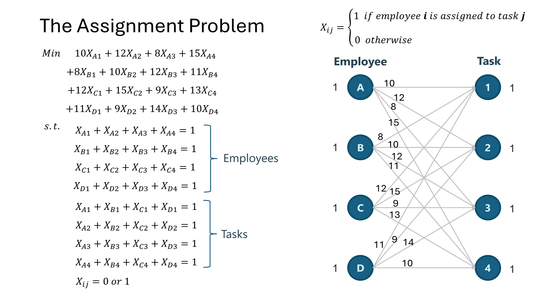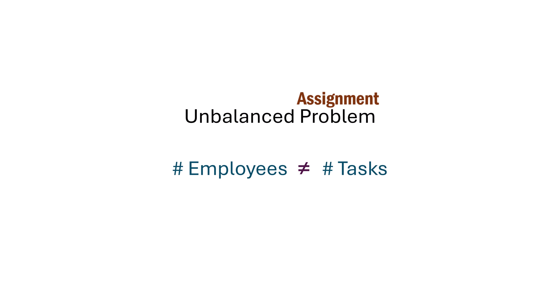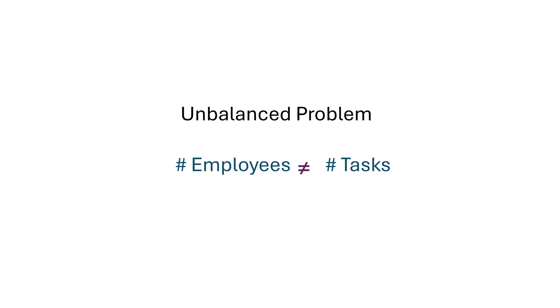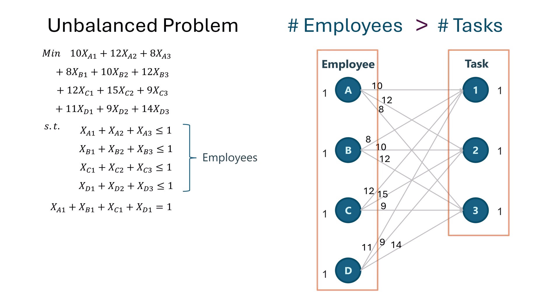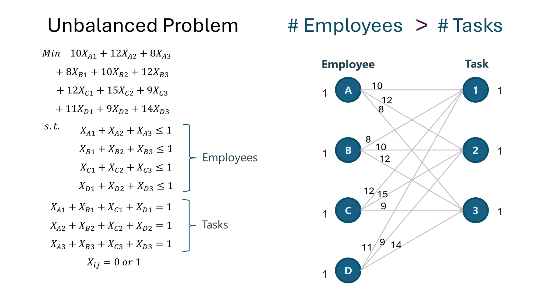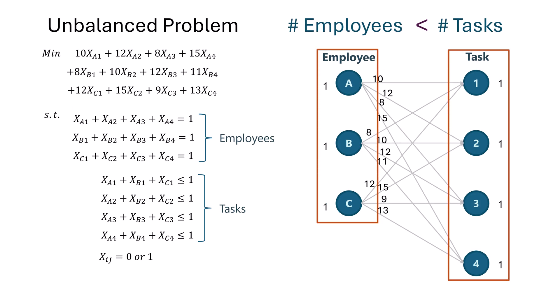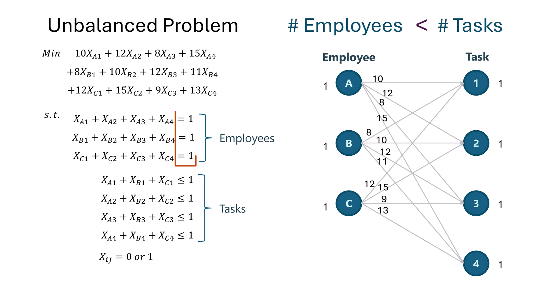Now let's briefly discuss what happens when the problem is unbalanced, meaning the number of employees is different from the number of tasks. If we have more employees than tasks, not all employees will be assigned a task. In this scenario, the employee constraints change from equality to less than or equal to 1, allowing for the possibility that an employee is assigned to at most one task. Conversely, if we have more tasks than employees, every employee must be assigned to a task, so the employee constraints remain equality.